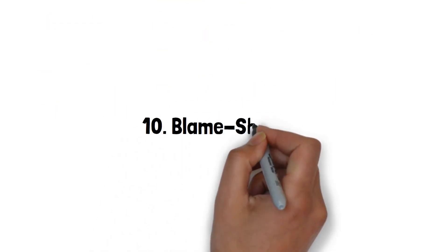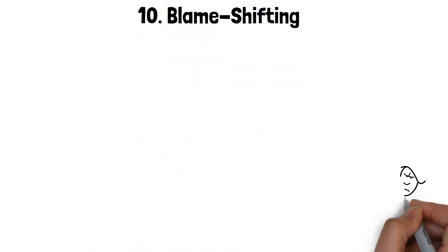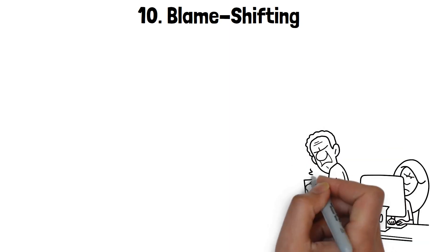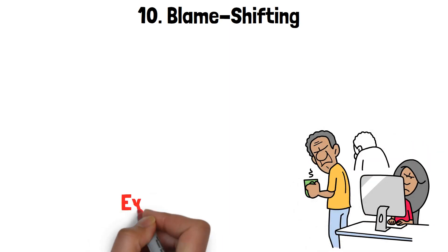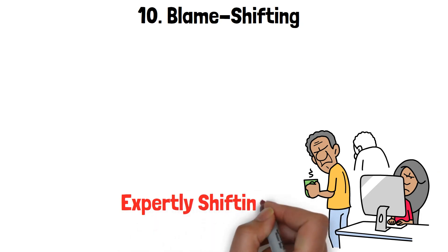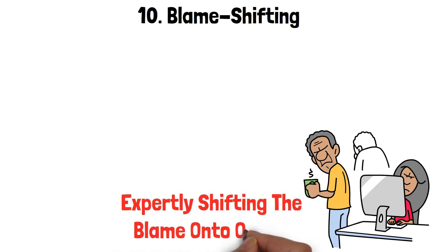10. Blame Shifting. When it comes to accountability, a narcissistic wife has a knack for evading it. Instead of owning up to her actions, you might find her expertly shifting the blame onto others, and often, that includes you.